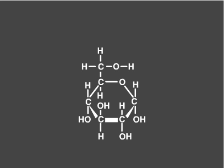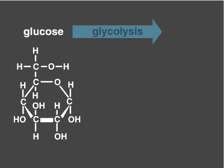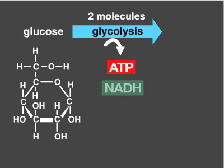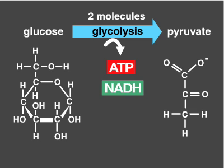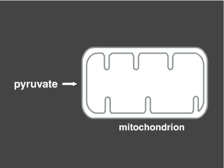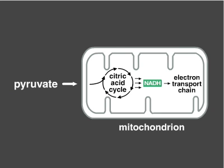Cells break down food molecules, such as glucose, through multi-step pathways. In the process of glycolysis, the breakdown of one glucose molecule into two 3-carbon molecules produces a net gain of energy captured by the molecules ATP and NADH. In eukaryotes, the breakdown product pyruvate is imported into mitochondria, where it ultimately feeds into the citric acid cycle and the electron transport chain.